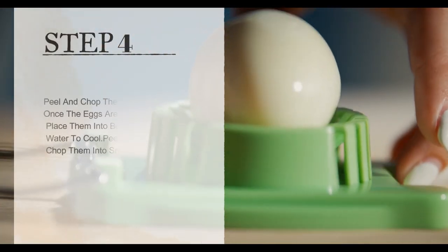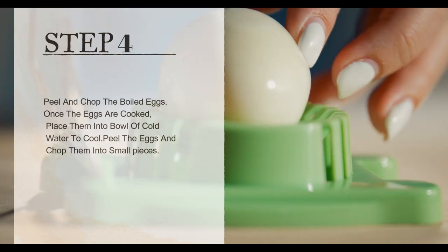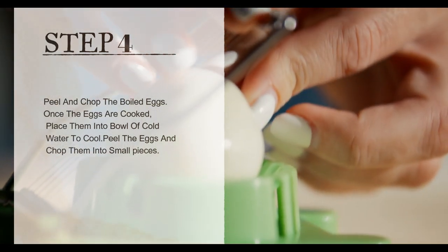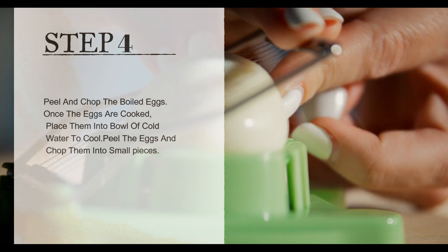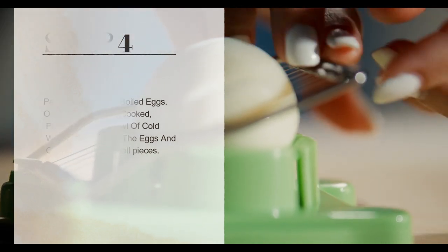Step 4. Peel and chop the boiled eggs. Once the eggs are cooked, place them in a bowl of cold water to cool. Peel the eggs and chop them into small pieces.